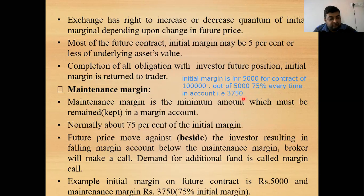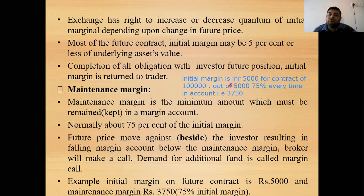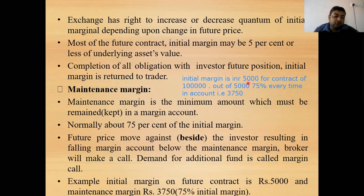The maintenance margin is the minimum amount that must always be retained in the margin account — in this example, it should not go below ₹3,750. If futures price movement results in the margin account falling below the maintenance margin, the broker will call for additional funds — this is the margin call. If the trader fails to maintain it, the broker or clearing house has the option to settle the trade before expiry.